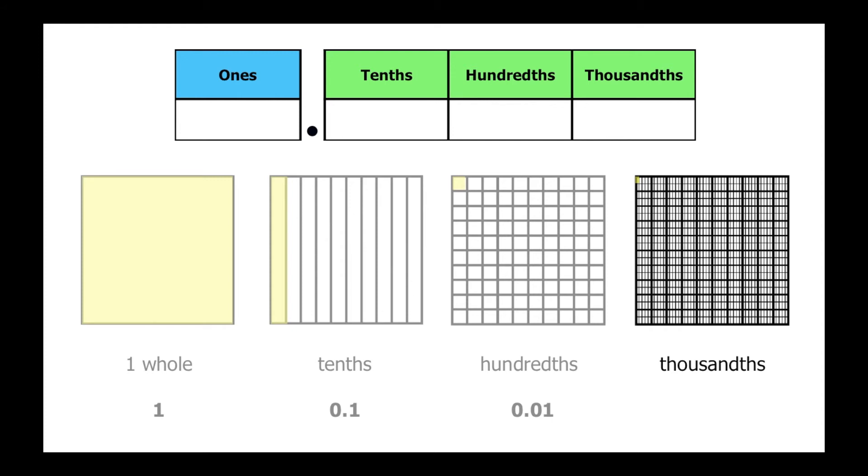When we write its value in the place value chart, we have zero whole squares, zero tenths, zero hundredths, but one thousandth. This is one thousandth.